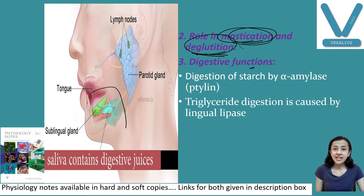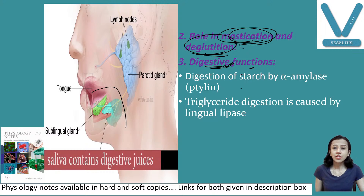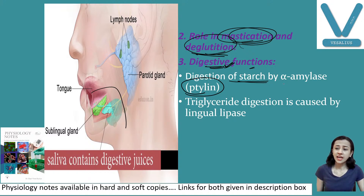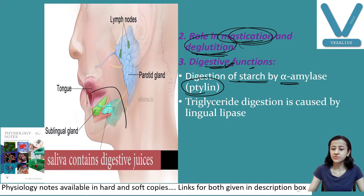Next is the digestive function, one of the very important functions of saliva. Saliva causes digestion of starch. Starch is digested by salivary amylase — also known as salivary alpha amylase. We will discuss how it works.